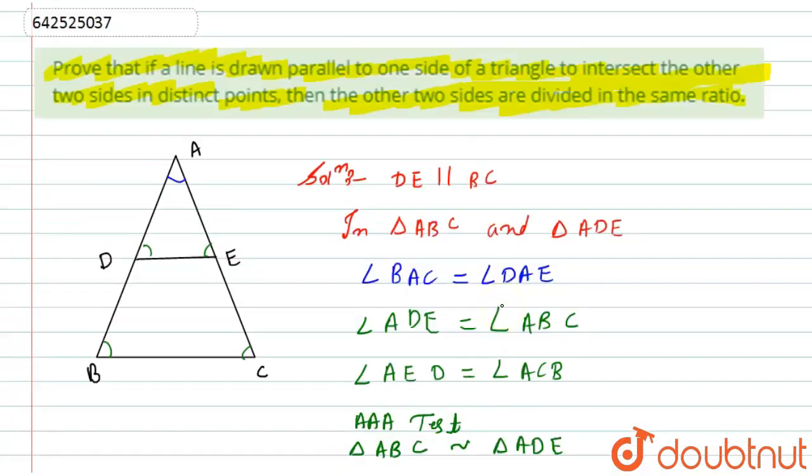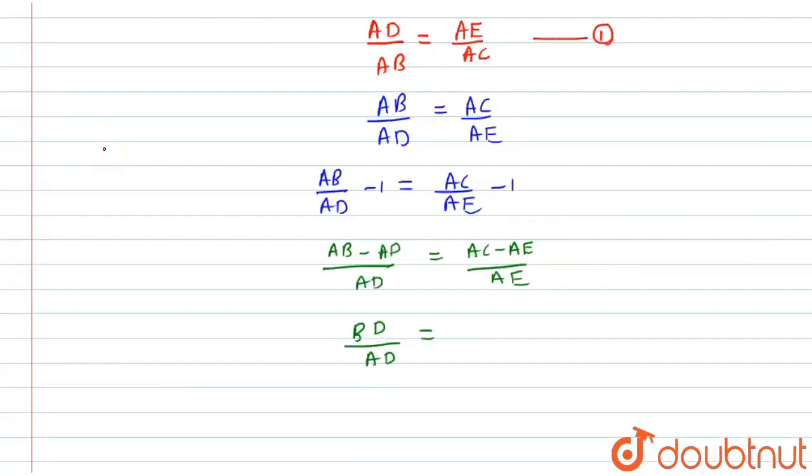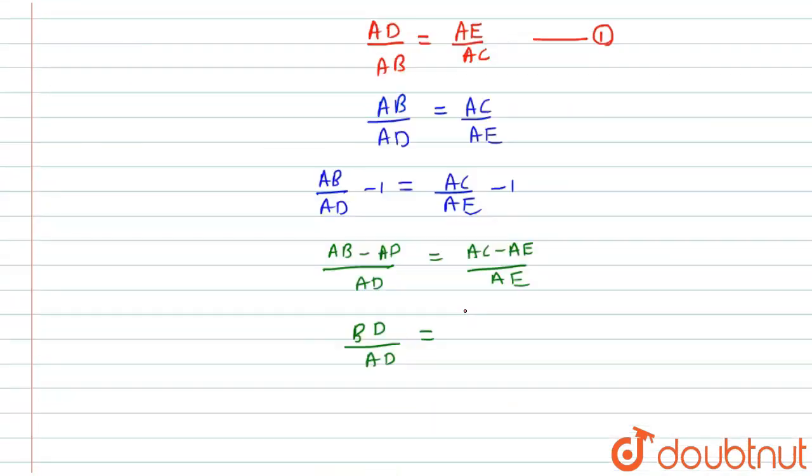Similarly, AC minus AE. See here, AC minus AE is nothing but equal to EC. So here I will simply say AC minus AE will be EC divided by AE.